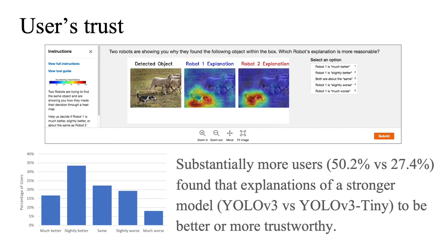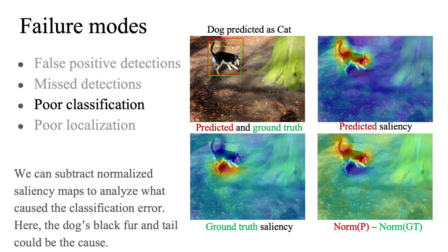We also show that D-RISE helps users pick a stronger model given the saliency maps. We show that D-RISE can be used to analyze different failure modes of detectors. For example, in this case a dog is misclassified as a cat. The difference between normalized saliency maps for the prediction and the ground truth suggests that the reason for this error was the dog's black fur and the tail.